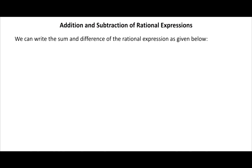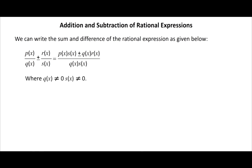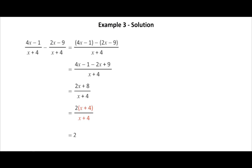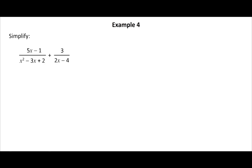Addition and subtraction of rational expressions: P(x)/Q(x) plus or minus R(x)/S(x) equals [P(x)·S(x) plus or minus Q(x)·R(x)] divided by [Q(x)·S(x)], where Q(x) and S(x) are not equal to 0. Example with same denominator: simplify (4x minus 1)/(x plus 4) minus (2x minus 9)/(x plus 4). Click the solution button. Example with different denominators: simplify (5x minus 1)/(x squared minus 3x plus 2) plus 3/(2x minus 4). Click the solution button to view the solution.